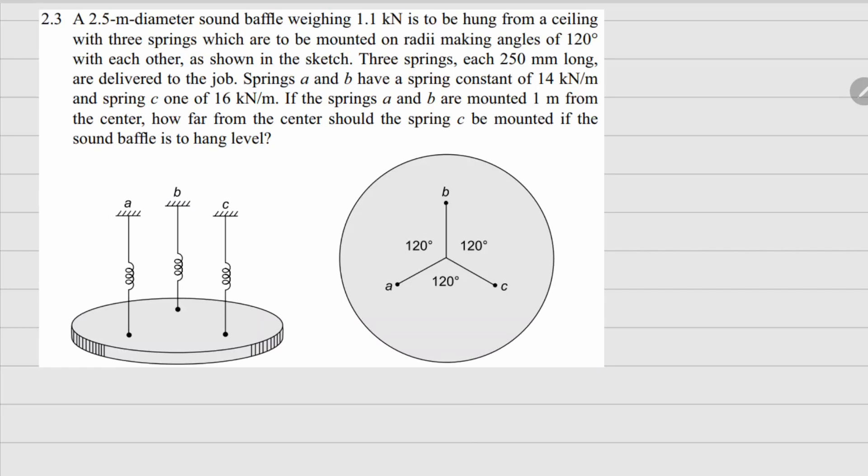This one is 2.3. Here we have a weighing machine that is hanging, its weight is 1.1 kilonewtons. It is supported by these three springs A, B, and C. The spring constant for A and B is 14 kilonewtons per meter.